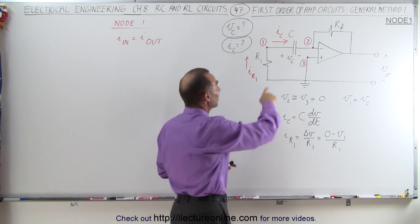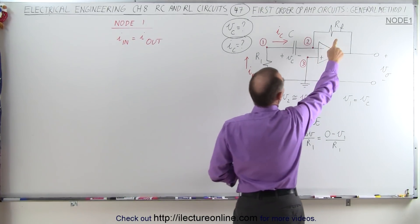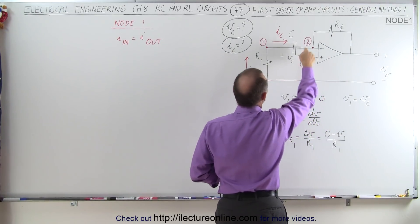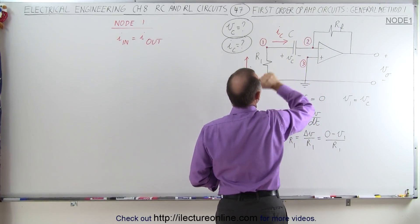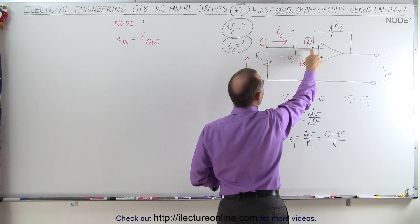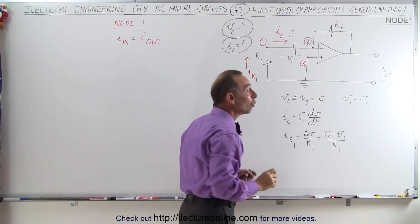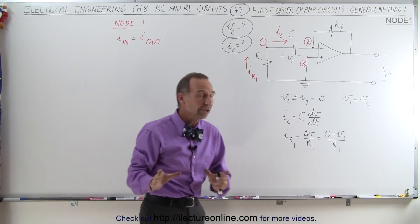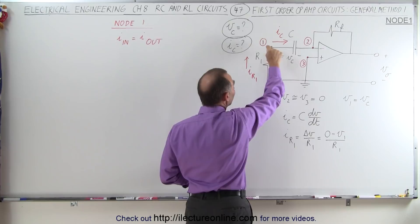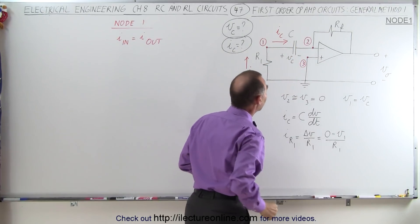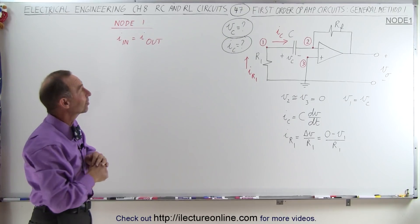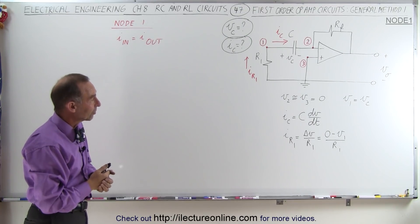Notice that we have our feed resistor right here, R1. We have the feedback resistor here, and over here we have a capacitor. We have several nodes: node 1 here, node 2 there, and node 3 there. In this video we're going to concentrate on node 1 to figure out the current through the capacitor and the voltage across the capacitor.